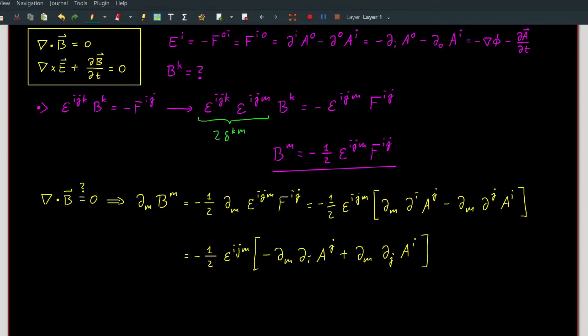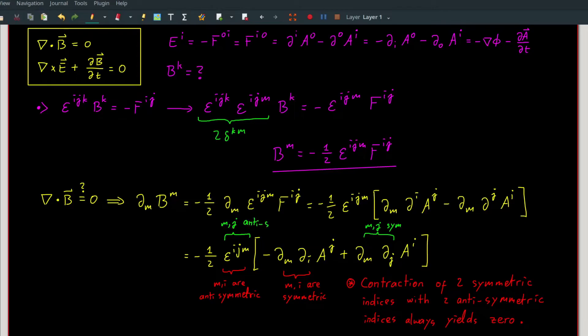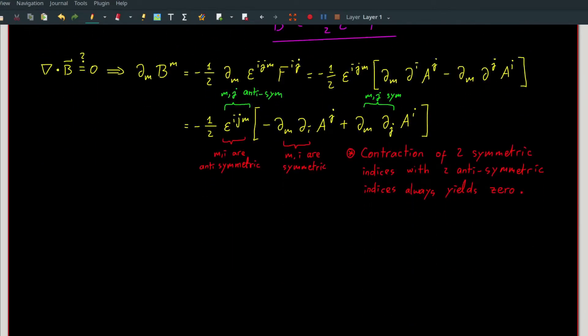Now, notice that the two partial derivatives, ∂_m and ∂_i are symmetric, i.e. we can swap the indices i and m freely. But in the epsilon, the indices i and m are anti-symmetric. Swapping them will introduce a negative sign. We can therefore use the fact that the contraction of two symmetric indices with two anti-symmetric indices always is zero. We can say the same for the m and j indices for the second term. Therefore, we can conclude that ∂_μ B^μ is equal to zero. Hence, the divergence of B is zero.